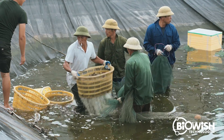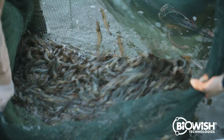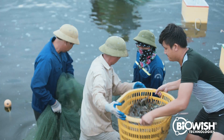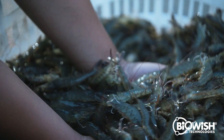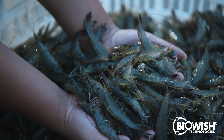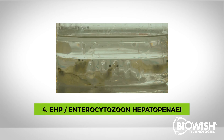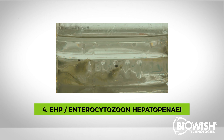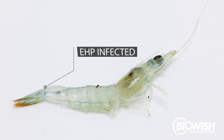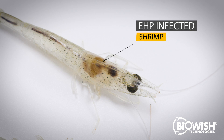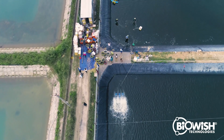Shrimp infected with WSD have a reddish color. Their carapace can easily separate from their cuticle. White spots will often appear on the carapace, although vannamei may not show this effect. The last disease that we will discuss is EHP, which stands for Enterocytozoon Hepatopenaei. EHP is caused by a parasite. EHP does not kill shrimp, but it severely slows and stunts their growth during all growth stages in which the disease is present.